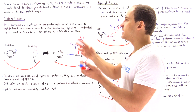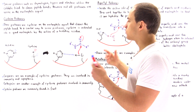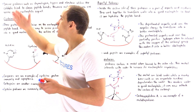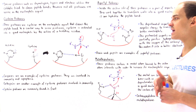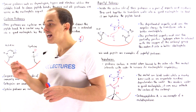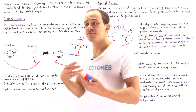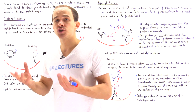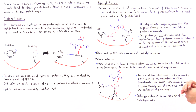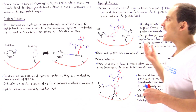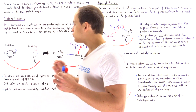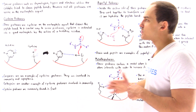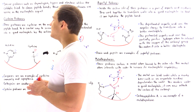The tetrahedral intermediate will eventually collapse, and after a few steps we break that peptide bond in a similar way to serine proteases. Two examples of cysteine proteases are caspases — the enzymes involved in programmed cell death, or apoptosis — as well as cathepsins, which are involved in immunity. Now let's move on to aspartate proteases.